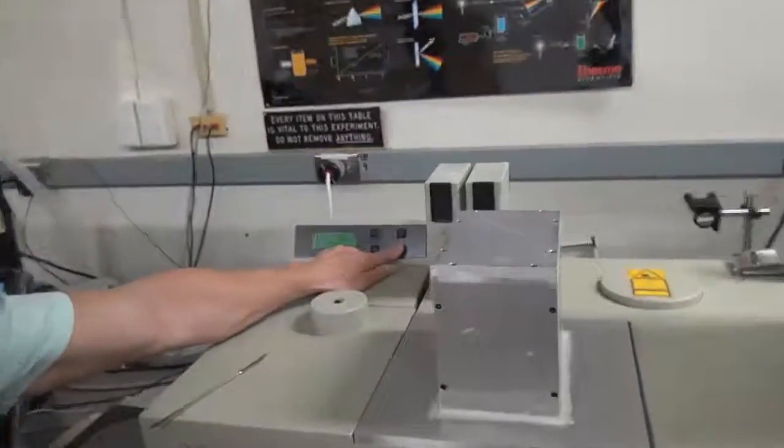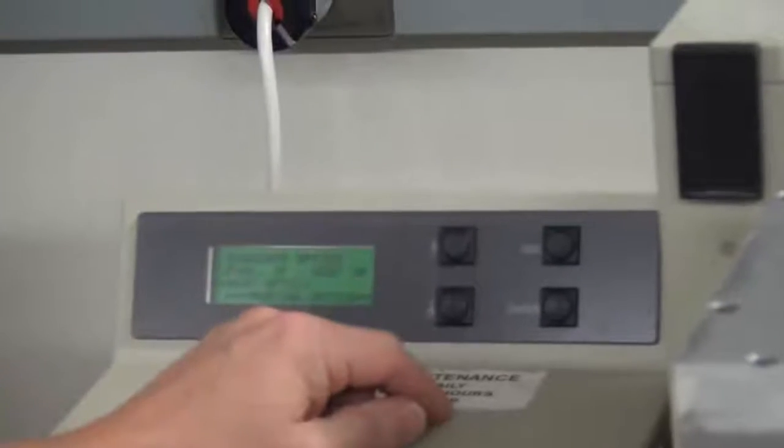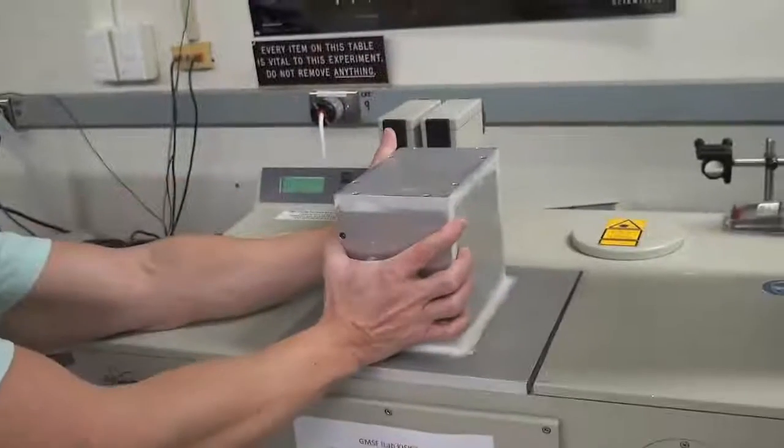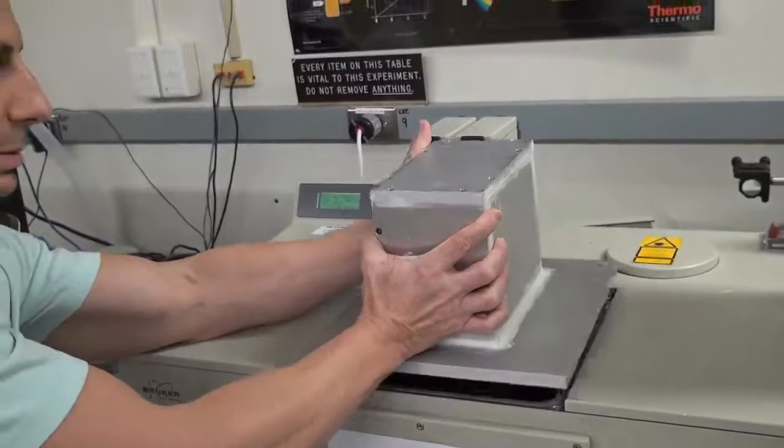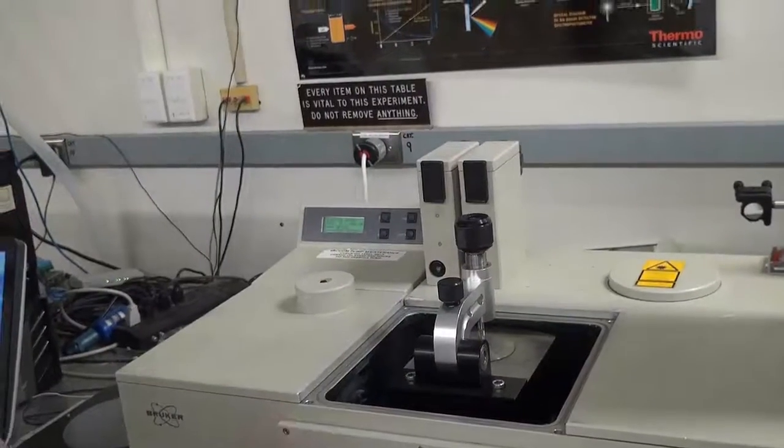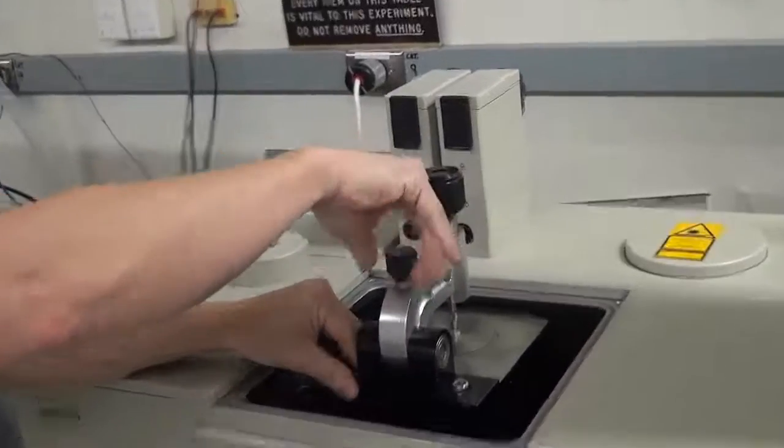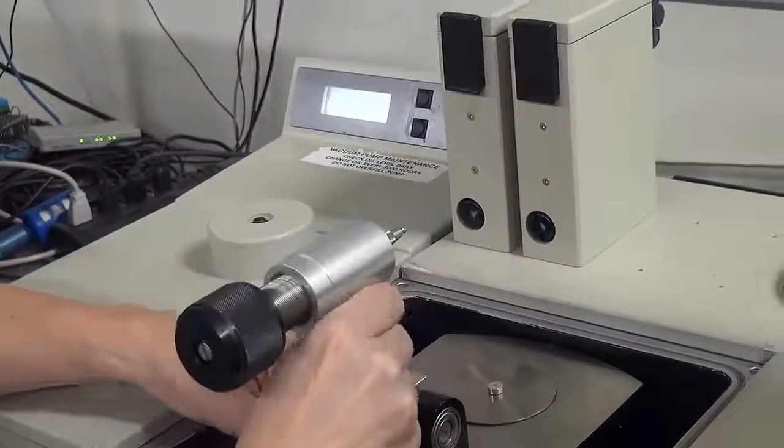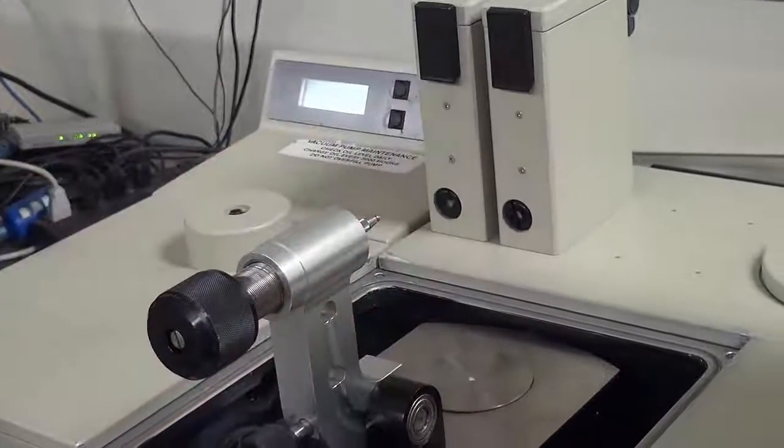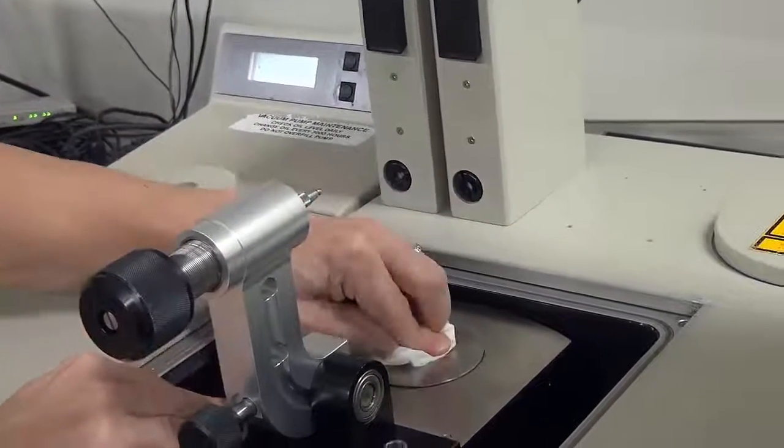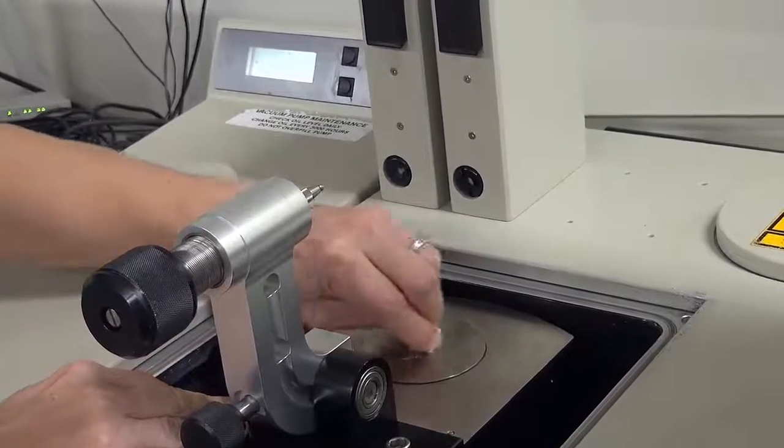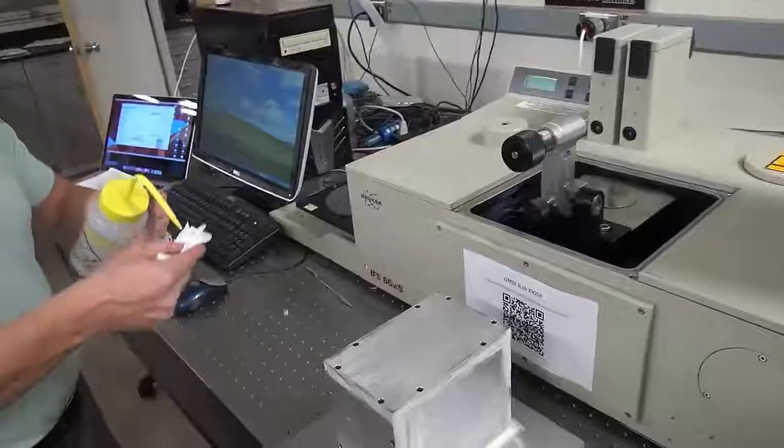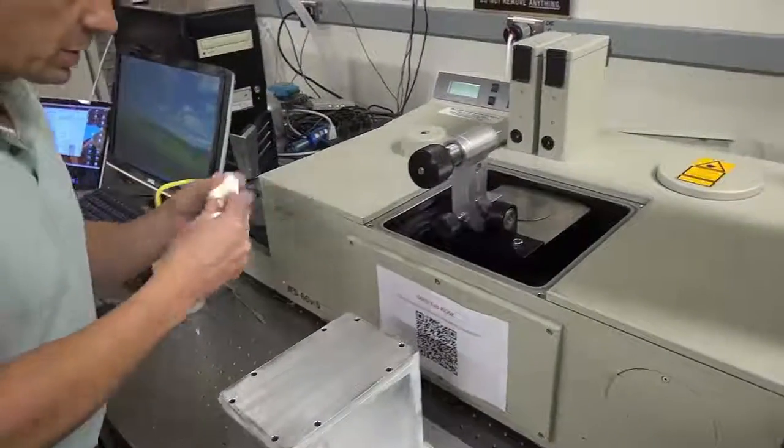Now you need to clean off your sample. So vent the optics. Lift the lid. Lift the arm up. And wipe off your sample with the chem wipes.